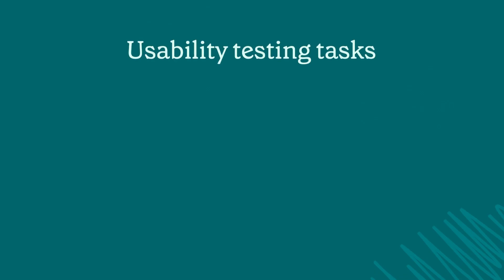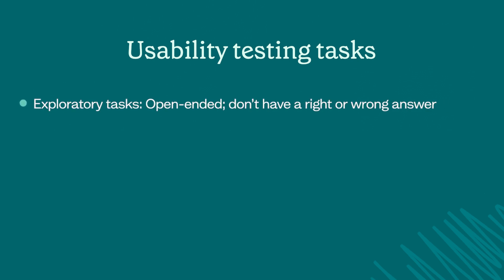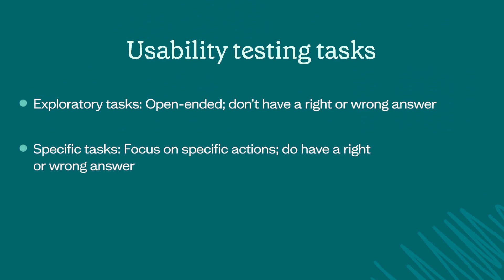Usability testing tasks can usually be split into two main categories. Exploratory tasks are open-ended and don't have a right or wrong answer — they help you see how users expect to find information in your product. Specific tasks, on the other hand, do have a right or wrong answer. They focus on specific actions with a goal of seeing how easy it is to complete those actions.